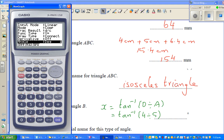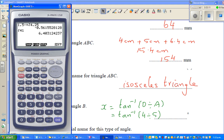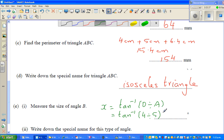So you go shift, tan, bracket, 4 divided by 5, which is also 0.8, which equals 38.7 degrees. We'll round it to one decimal point, or you can round it to the whole number. That is 39 degrees. So X is equal to 39 degrees.